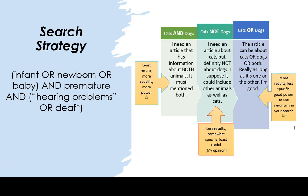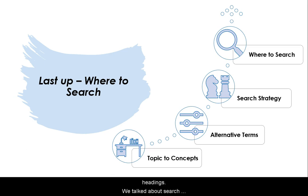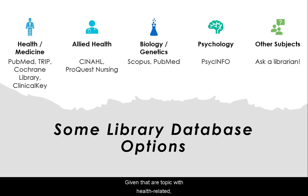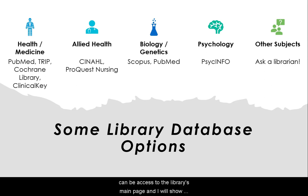So we've discussed breaking down your topic into concepts, the importance of gathering alternative terms such as synonyms and subject headings, and we've talked about search strategies. Now I'm going to talk about choosing the right place to search and give you some examples. Given that our topic was health related, listed are relevant library database options. Subject-specific databases can lead you to more relevant resources quicker. All of these databases and more can be accessed through the library's main page, and I will show you where that is shortly.